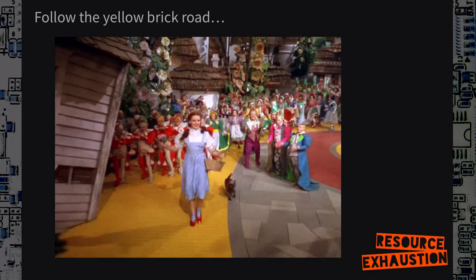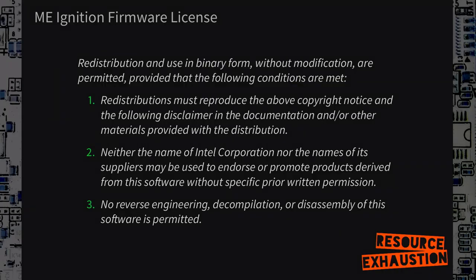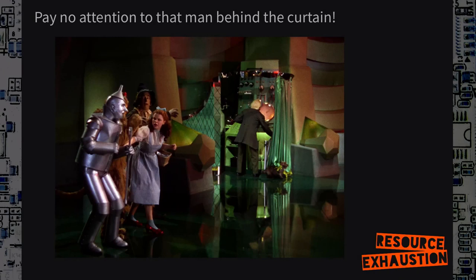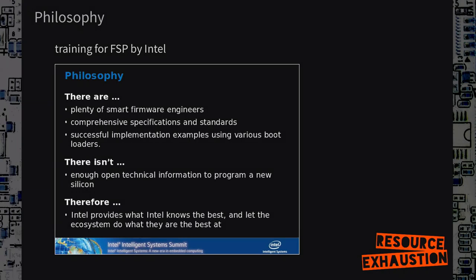So let's follow the yellow brick road. This is the license. The license allows basically only redistribution — you may not make any changes, you may not reverse engineer it, you may not decompile it, you may not disassemble it. So how do we actually verify that it works as desired and as promised? Pay no attention to the man behind the curtain — if you've seen The Wizard of Oz, you know the scene. That's literally what they want. Their philosophy is kind of a shallow thing — they don't really want to be very open with the information.